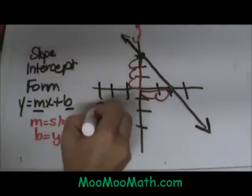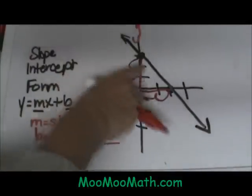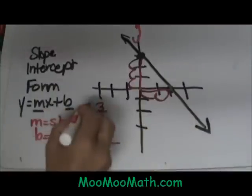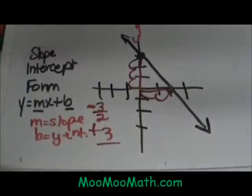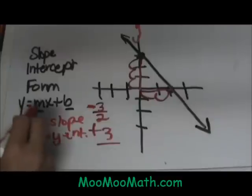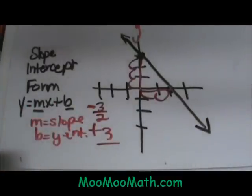So it is 3 halves. Now I also need to look. It is sloping down so it is a negative 3 halves. Then all we do is plug in m and b into our equation.